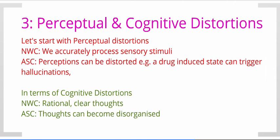Perceptual and cognitive distortions: when we're in normal waking consciousness, we can accurately process sensory input — sounds, visions, etc. When we're in an altered state of consciousness, our perceptions can be distorted. We can hallucinate, we experience diminished pain. We might not process certain sounds or visual information, for example when driving drunk. In terms of cognition, in NWC we can make sense of our thoughts and rationalize information. But in an altered state, our thoughts can become disorganized — when we're having a weird dream, in a drug-induced state, or we might become paranoid when drunk.